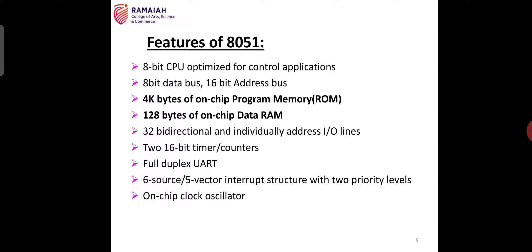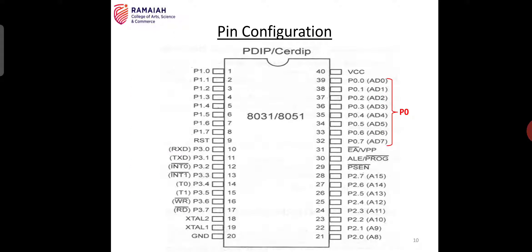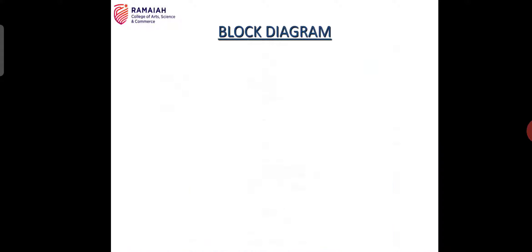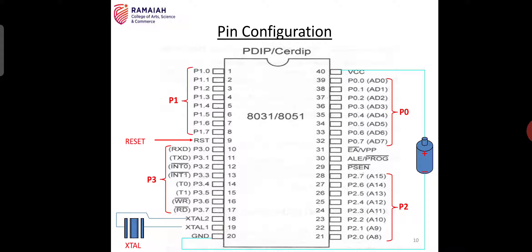These are the features of the 8051 microcontroller. Moving to pin configuration, it is a dual in-line package, meaning the pins are available on both sides. Both the 8051 and 8031 have the same structure. In the pin configuration we can observe that, as in the block diagram, it has four I/O ports — port 0, port 1, port 2, and port 3 — to communicate with I/O devices.